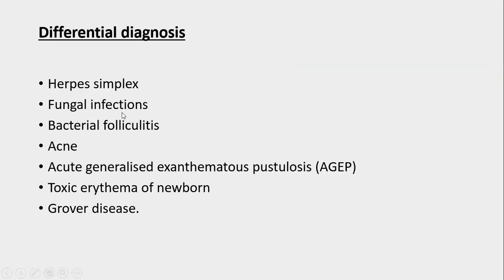Differential diagnosis of miliaria includes herpes simplex, fungal infections, bacterial folliculitis, acne, acute generalized exanthematous pustulosis, toxic erythema of the newborn, and Grover's disease. All these conditions have some differences and some similarities with the different kinds of miliaria.